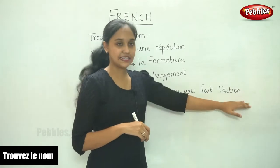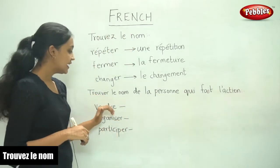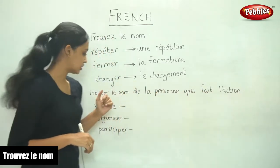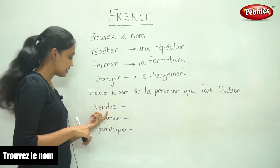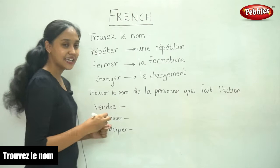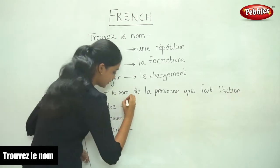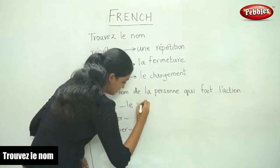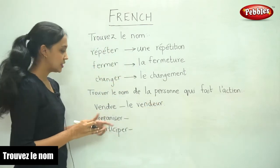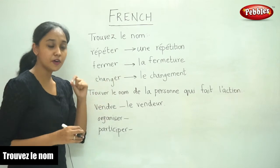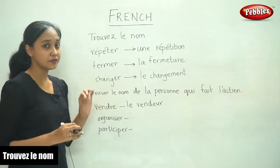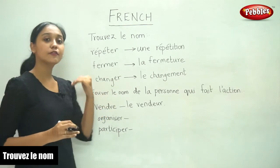Now the next part of this exercise is trouver le nom de la personne qui fait l'action - find the name of the person who does the action. So the first word is vendre, to sell. Who is the person who sells? He is the vendor - le vendeur. We are finding the name of the person who is doing the given action, not the noun form of the action itself.